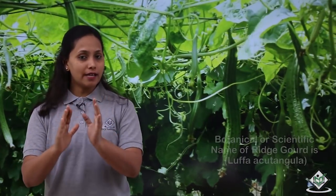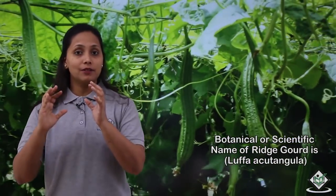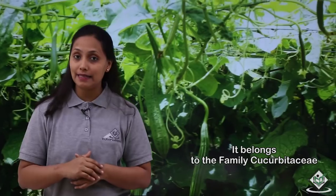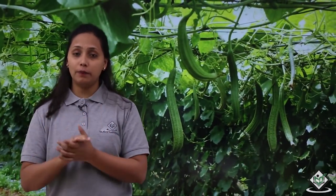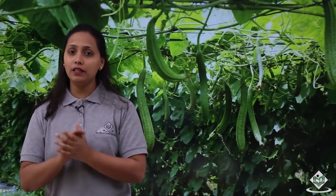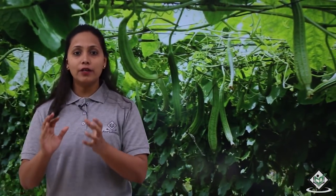The botanical or scientific name of ridge gourd is Luffa acutangula, and it belongs to the family Cucurbitaceae. Ridge gourd is a fence creeper and can also be grown on the ground. It is an annual herbaceous plant which dies at the end of each growing season. Ridge gourd stem is angular in cross section with five longitudinal ridges. Ridge gourd leaves are alternate, rounded, hairy, and kidney shaped.